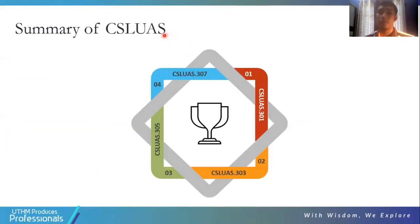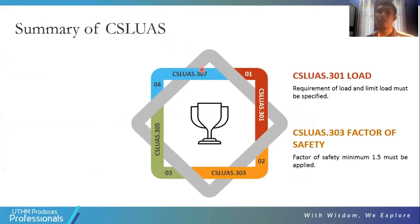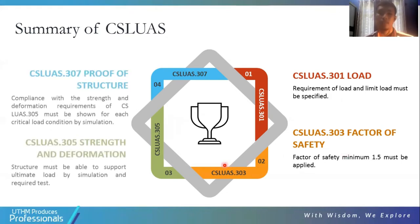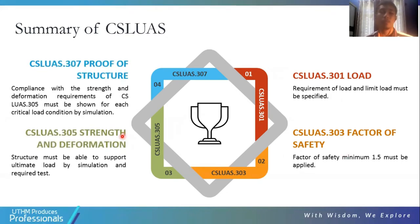A summary for CS-LUAS standards: the requirement for load and limit load must be specified, which has been implemented in this research. The factor of safety minimum of 1.5 has also been implemented. The strength and deformation must be able to support ultimate loads by simulation and required tests, and the proof of structure in compliance with CS-LUAS 305 strength and deformation requirements has also been implemented.